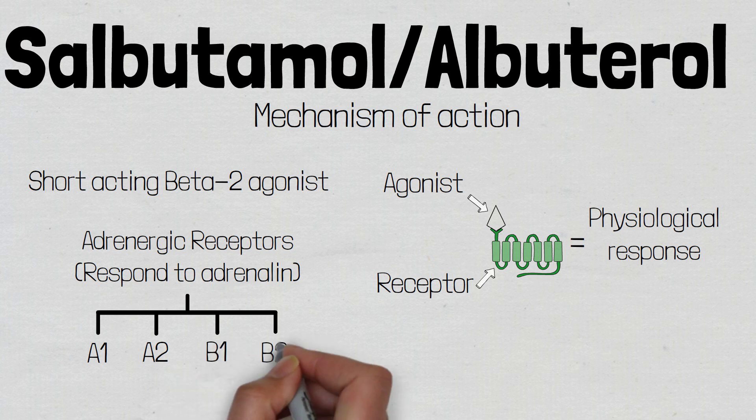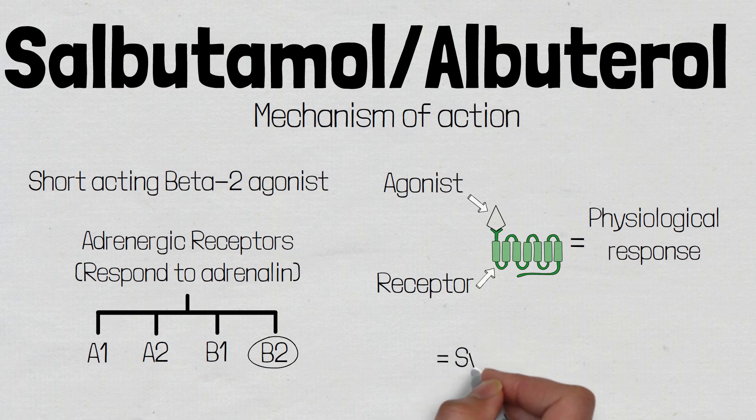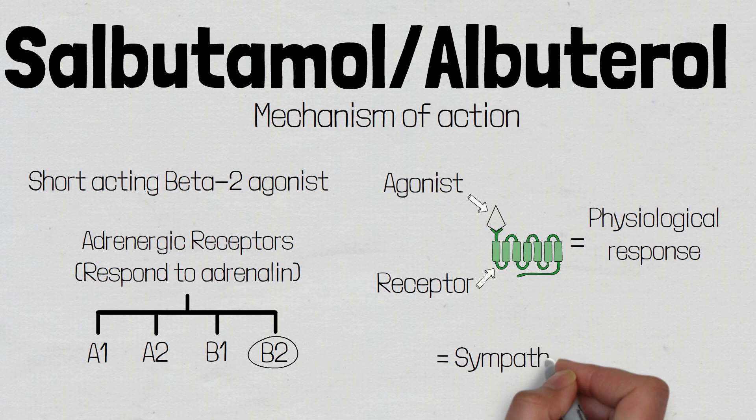Therefore, when salbutamol binds to a beta-2 receptor, it mimics the effects that adrenaline and noradrenaline would normally have. Because salbutamol mimics the effect of the sympathetic nervous system, it is known as a sympathomimetic drug.